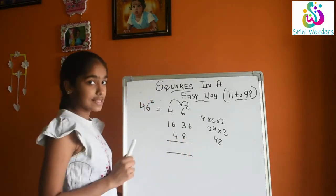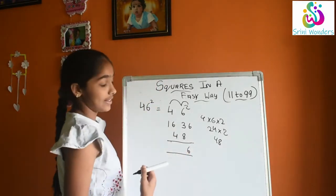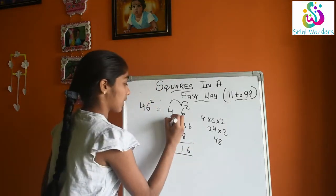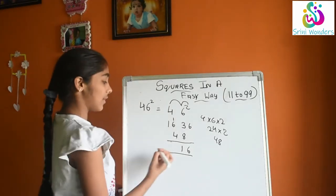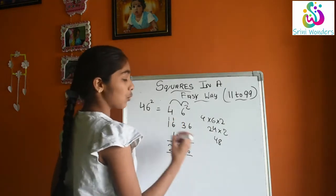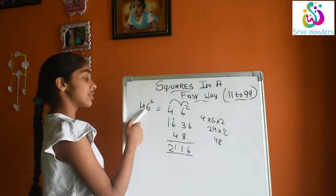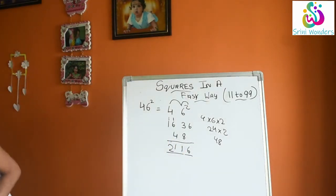Now what we will get as the answer? 6 directly. 3 plus 8 is 11, 1 here, 1 here. 1 plus 6 is 7, 7 plus 4 is again 11. Here 1, here 1. 1 plus 1, 2. 2116 is our answer. So what is 46 square is 2116.